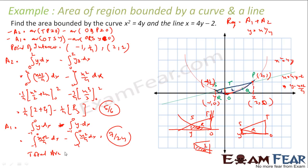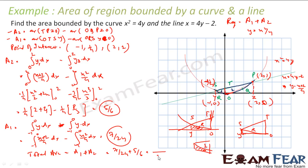So the total area is A1 plus A2, which is 7/24 plus 5/6. Taking 24 as the common denominator, this becomes 7 plus 20, that is 27/24, which simplifies to 9/8. And that is the answer.